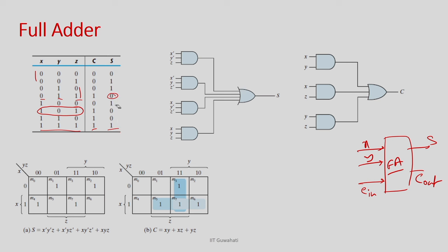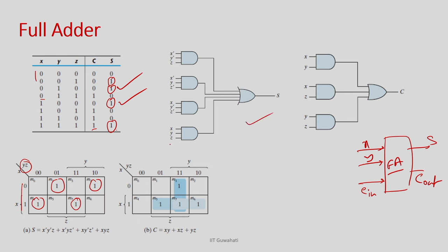This way you can identify the full truth table. If I minimize the circuit using a Karnaugh map, I put the values in a table where x is the row and y, z are the columns. There are four 1s for the sum — at positions 1, 2, 4, 7 — which cannot be clubbed for optimization. So I implement them as 4 minterms: x̄ȳz, x̄yz̄, xȳz̄, and xyz, ORed together to give sum.